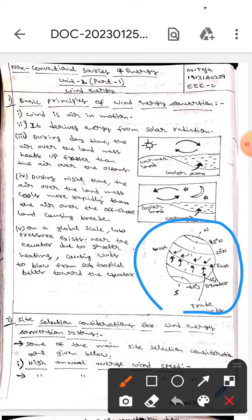If you observe this figure, on a global scale low pressure exists near the equator due to greater heating. This causes winds to flow from subtropical belts towards the equator.